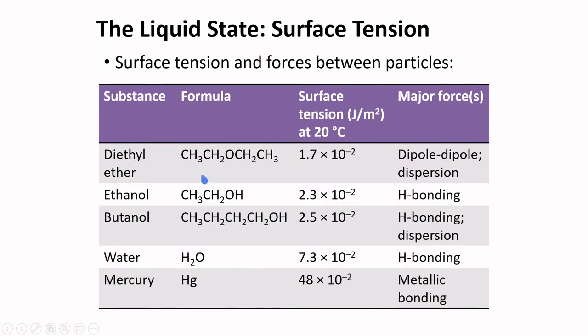Here are surface tensions of different substances. Mercury, having metallic bonding, has the highest surface tension. Water, which has high hydrogen bonding, also exhibits high surface tension. As the energy of attraction between particles decrease, surface tension also decreases.